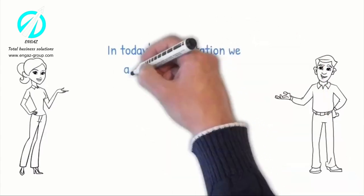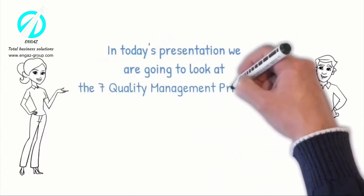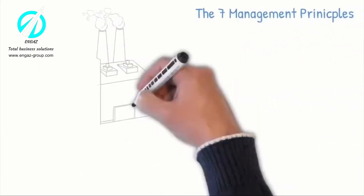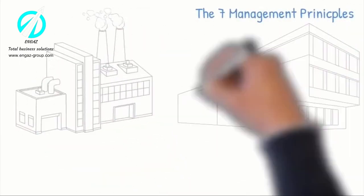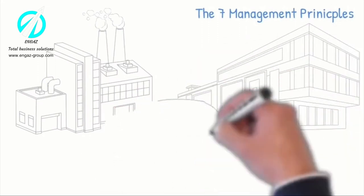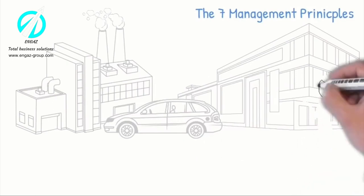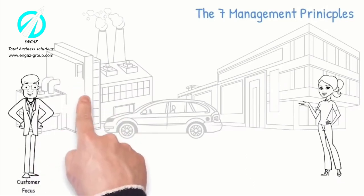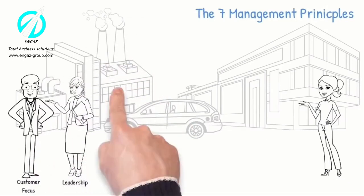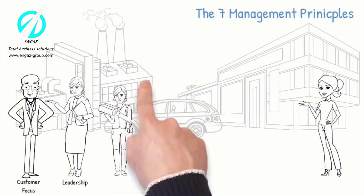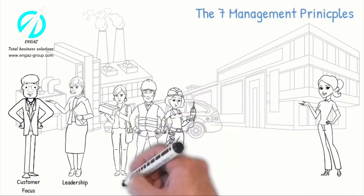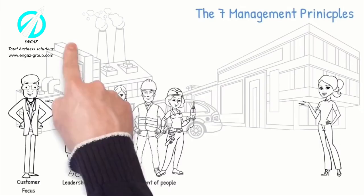In today's presentation we are going to look at the seven quality management principles and how to apply them to the organization's processes. The seven quality management principles are a set of fundamental beliefs, norms, rules and values that are accepted as true and can be used as a foundation to guide an organization's performance improvement, by analyzing and understanding the customer requirements, which will be included and measured in the organization's objectives by the leadership and communicated to engage all the people of the organization.